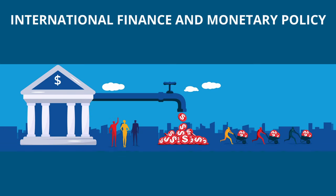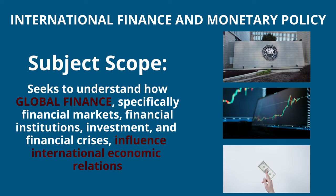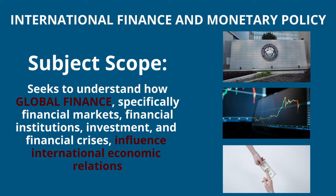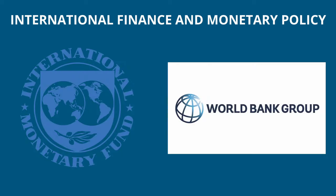Next, we have international monetary policy and finance. The finance portion is pretty straightforward — we are looking at how financial institutions like banks, stock markets, and currency markets, as well as the regulations that govern them, affect national economies and the global market at large. This also includes how multinational financial institutions like the International Monetary Fund and World Bank influence global economic growth and financial stability.